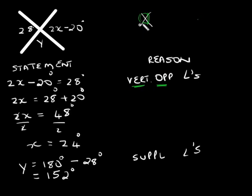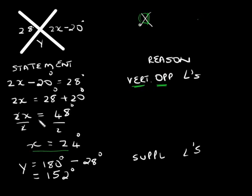So 2x minus 20 is equal to 28 degrees. We need to solve for x, meaning we want the x's on the left and constants on the right. So 28 plus 20 gives us 48 degrees. We divide by the coefficient of x: 2x divided by 2 on the left, and 48 divided by 2 on the right, giving us a value of x equals 24 degrees.